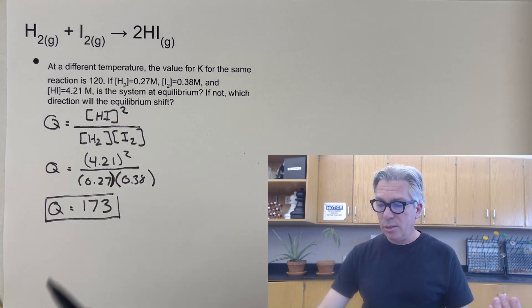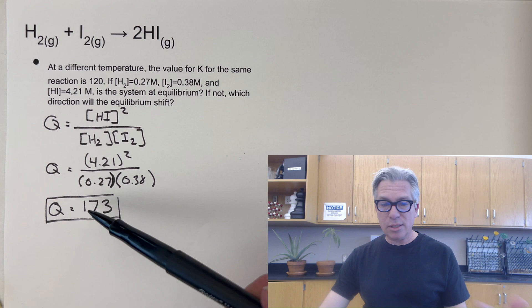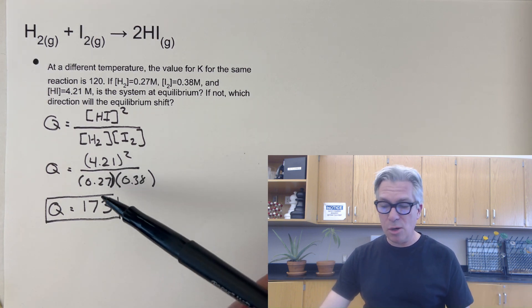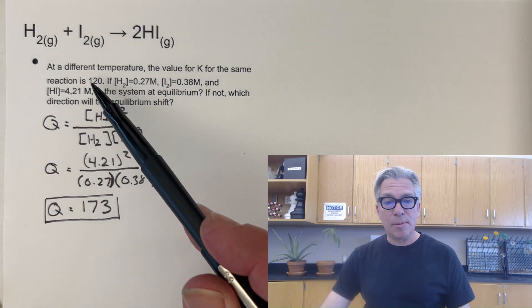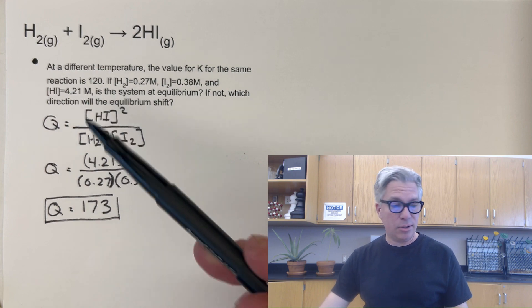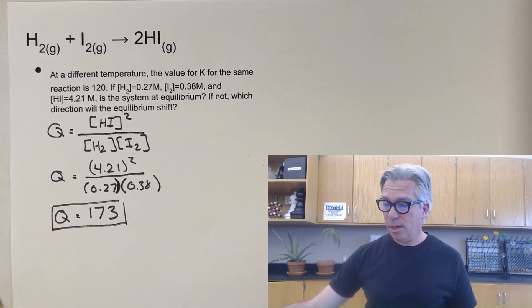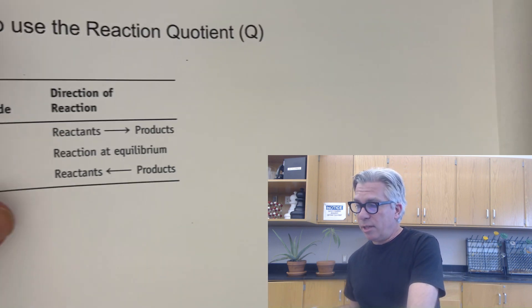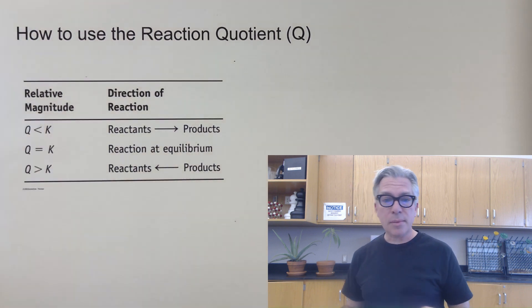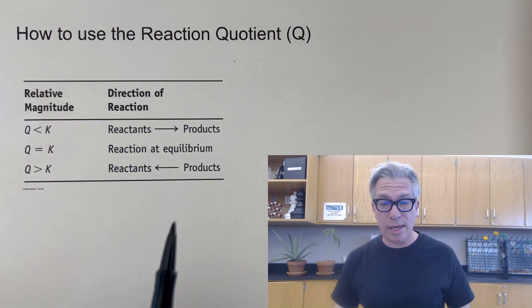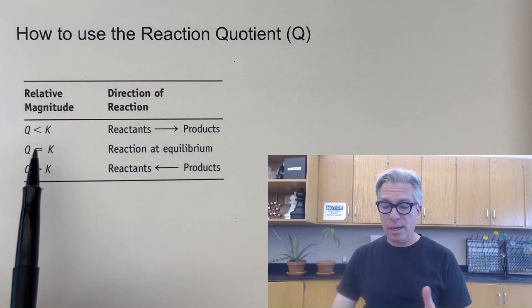So what do I do with that number? Well, first, what we're going to do is we're going to compare our Q value. This is the ratio at this moment to what the equilibrium constant is. And it's actually higher than the equilibrium constant. So you may want to pause the video and write this table down. This is really the summary of how we use reaction quotient. We figure out our quotient and we compare it to K.